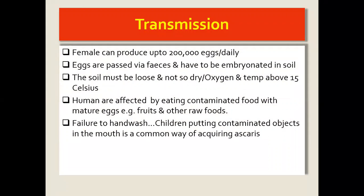In transmission, the female Ascaris lumbricoides can produce huge numbers of eggs on a daily basis. These eggs are passed in her faeces and have to reach soil to become embryonated or mature. They prefer soil that is loose and a bit wet, not too dry, with good access to oxygen and temperatures above 15 degrees.